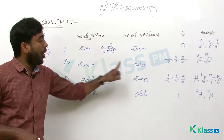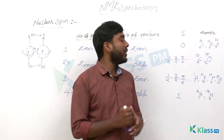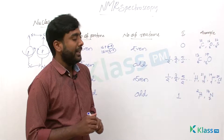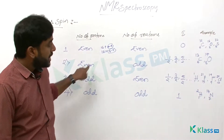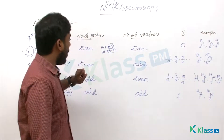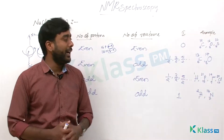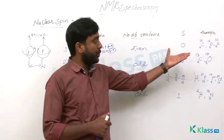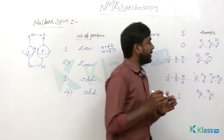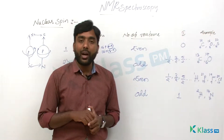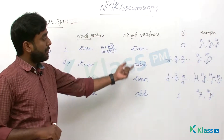The next type is even-odd: the number of protons is even but the number of neutrons is odd. For example, C-13 has 6 protons (even) and 7 neutrons (odd). In that case, the I values will be 1/2, 3/2, or 5/2. Another example is O-17, which has 8 protons (even) and 9 neutrons (odd) — so the number of protons is even and the number of neutrons is odd.